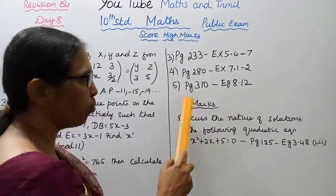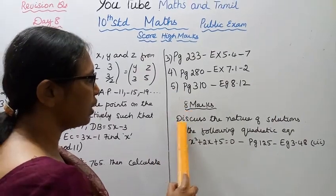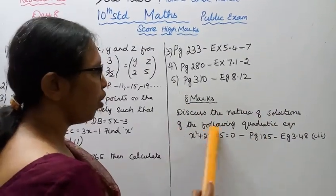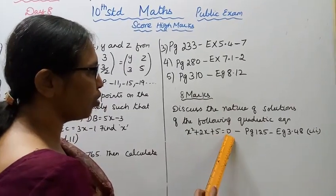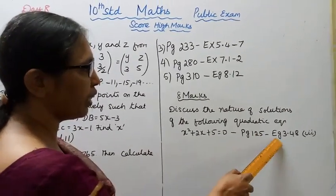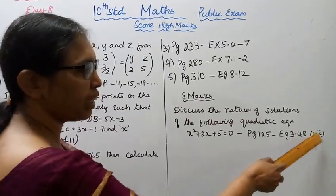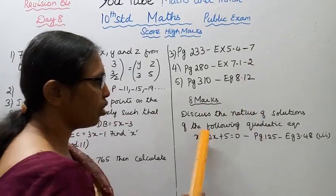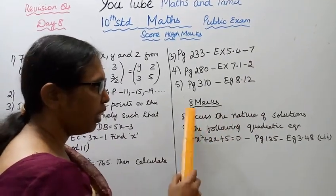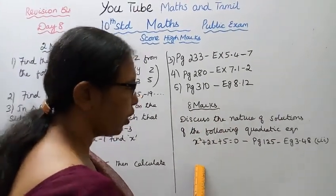Discuss the nature of solutions of the following quadratic equation: x² + 2x + 5 = 0. Page 125, Example 3.48. You can solve for the nature of the quadratic equation graphically.